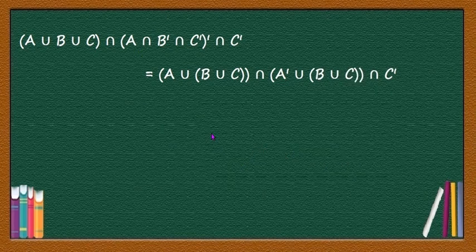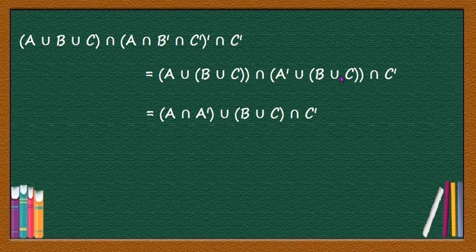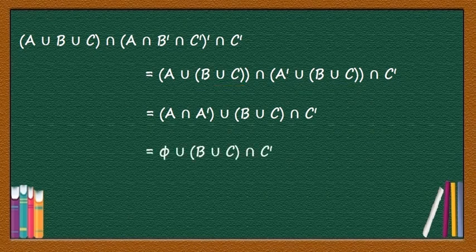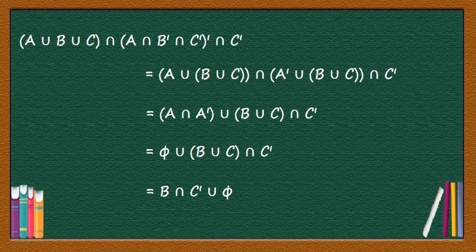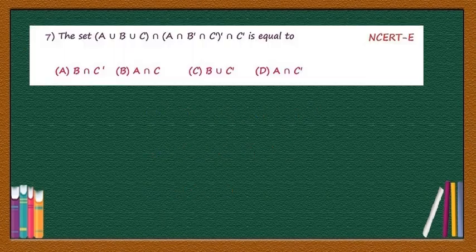Now, (A ∪ B ∪ C) ∩ (A' ∪ B ∪ C) gives (B ∪ C), since A ∩ A' = ∅ and (B ∪ C) is common. Intersecting with C': B ∩ C' ∪ (C ∩ C') = B ∩ C' ∪ ∅ = B ∩ C'. Therefore, the correct answer is option A: B ∩ C'.